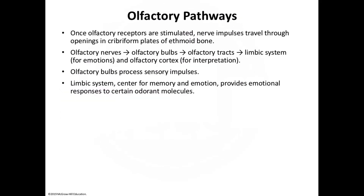As an odorant travels inside and causes a nerve impulse, it goes from the olfactory nerve to the olfactory bulb, to the olfactory tract, to the limbic system — which is why we have emotional reactions to smells — and finally to the olfactory cortex for interpretation of the smell.